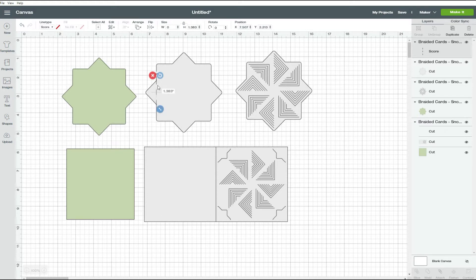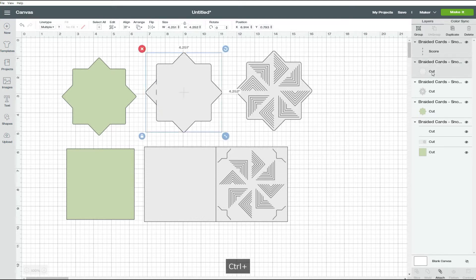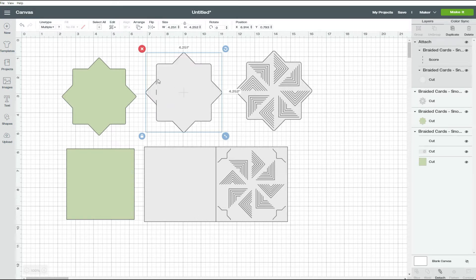That will turn that cut line into a score line and then we need to attach that score line to our cut line around. You can do it either way by clicking and dragging a rectangle around both elements, or by selecting the top one and holding the control key on a PC or command key on a Mac and clicking on the second layer. Once you have both of them selected, click on attach.